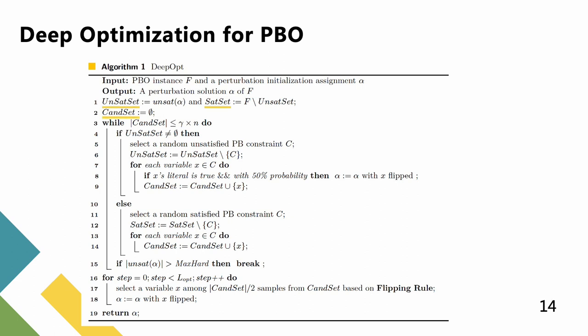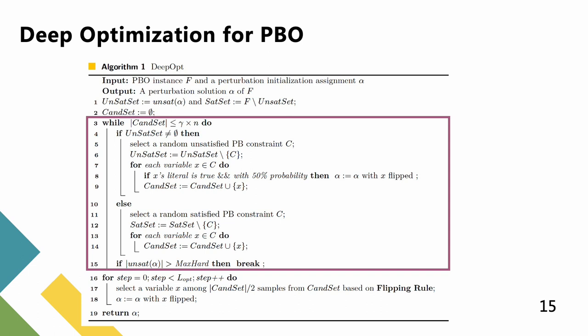We use the unsat(α) function to denote the set of unsatisfied PB constraints under an assignment α. At first, the algorithm uses unsatisfied set and satisfied set to store unsatisfied and satisfied PB constraints under a perturbation initialization assignment, respectively. Afterward, a candidate variable set can't set is initialized to an empty set, which stores all unlocked variables in the following search.